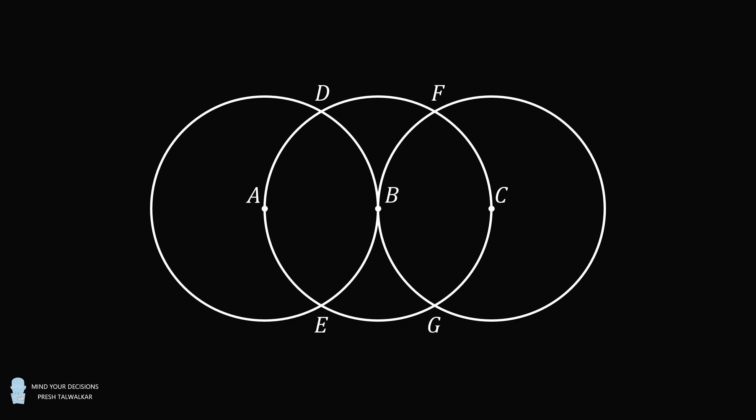Consider two different regions. One region is bounded by the arcs BD, DF, and FB, and the other region is bounded by the arcs BE, EG, and GB. If each circle has a radius equal to 4, work out the total area of the two shaded regions. Give your answer in terms of pi.